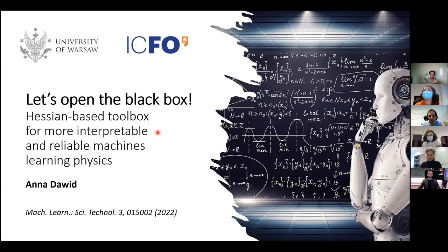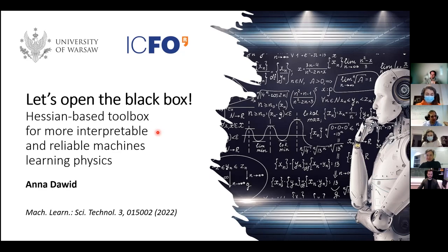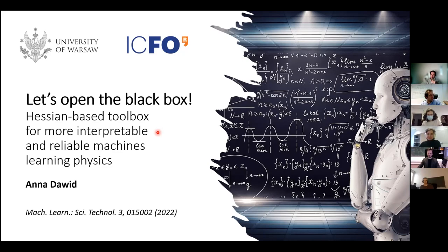Welcome everybody. In this week's seminar we have the pleasure to have Anja David with us. Anja is a PhD student in the group of Magic 11 Sign in IGFO, but also a PhD student of Michael Tomza from University of Warsaw. She works mostly in applications of broadly understood machine learning to quantum physics. Today she'll be talking about matters of interpretability and reliability of those techniques when applied to physics problems.